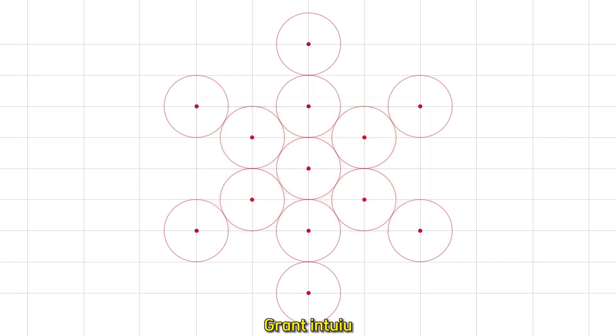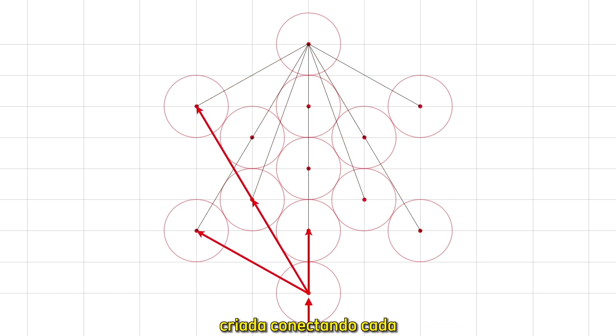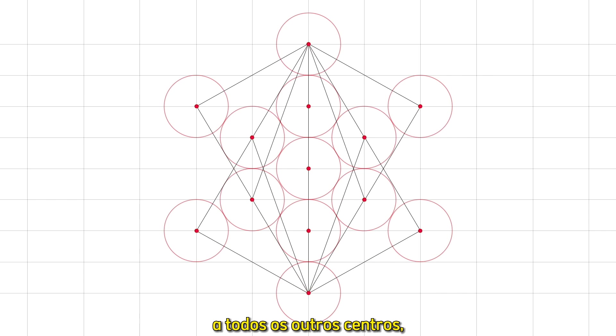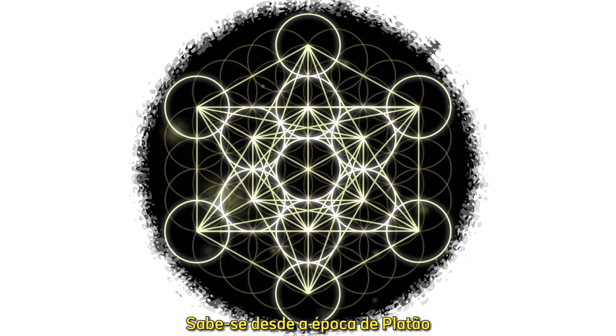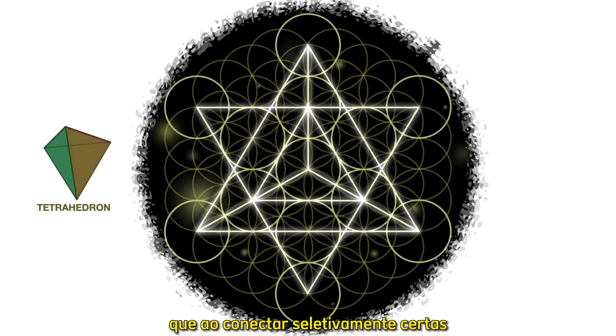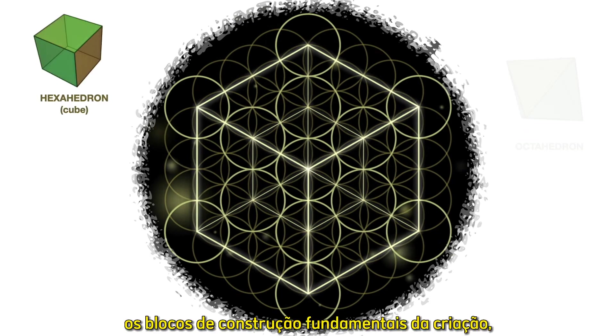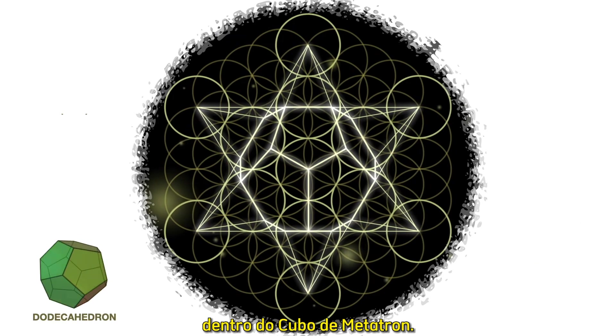Grant intuited that if there was a simple key to the seeming complexity of the Giza pyramids, it must be found somewhere within the inherent geometry created by connecting every center of the thirteen equal circles to every other center, which when accomplished looks like this. It's been known since Plato's time that by selectively connecting certain combinations of these lines, the five Platonic solids, the basic building blocks of creation, can all be perfectly formed within Metatron's cube.